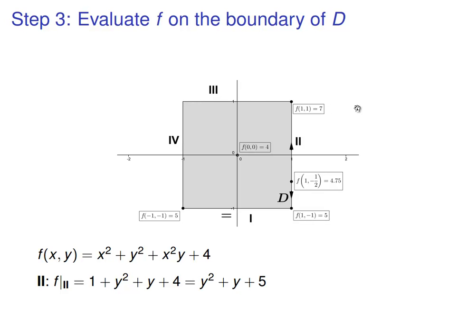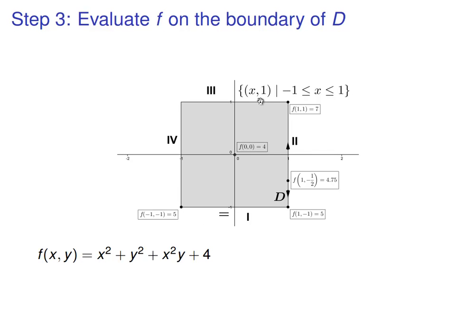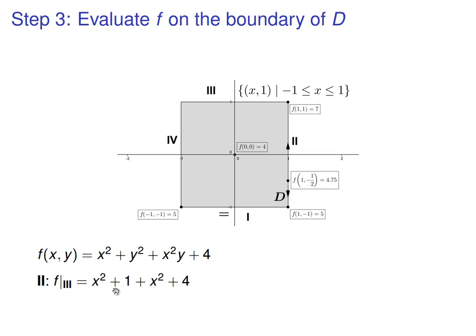and then at the other corner, you get 7, which is now the highest along this line segment. Let's move on to the third side. On the third side, all the x values range. The y value is always equal to 1. So our points look like x comma 1, where x goes between negative 1 and 1. Again, we go back to our function. Now the y value is 1, so we can put that in for y everywhere. And we'll get x squared plus 1 plus x squared plus 4, which will be 2x squared plus 5.